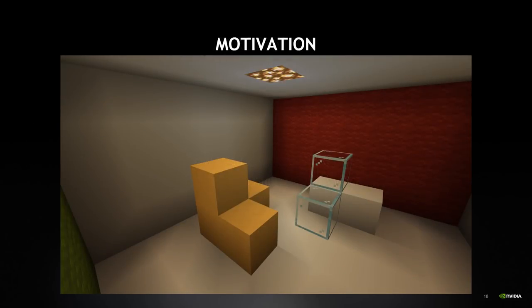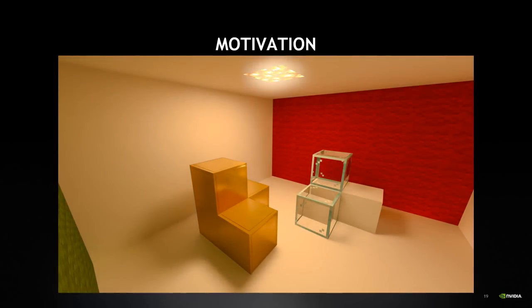Let's start with a motivational image. This is a screenshot from Minecraft without any ray tracing — a pretty basic room with red, white, and green walls, some golden blocks in the middle, a glow block on top, and a few glass blocks. And here's the ray traced version of it. Now you can see that the whole feeling and lighting is more realistic. You can see very nice soft shadows on the floor, green and red tint on the white floors and walls, and the whole thing is just more realistic.